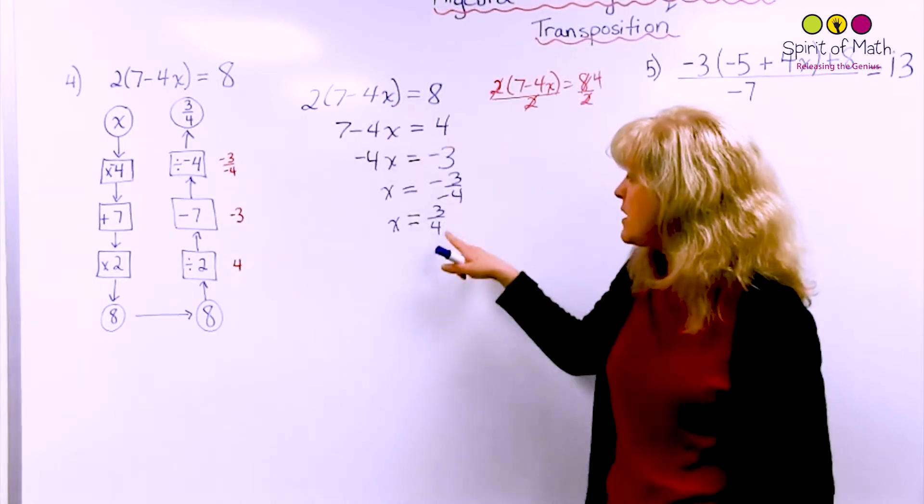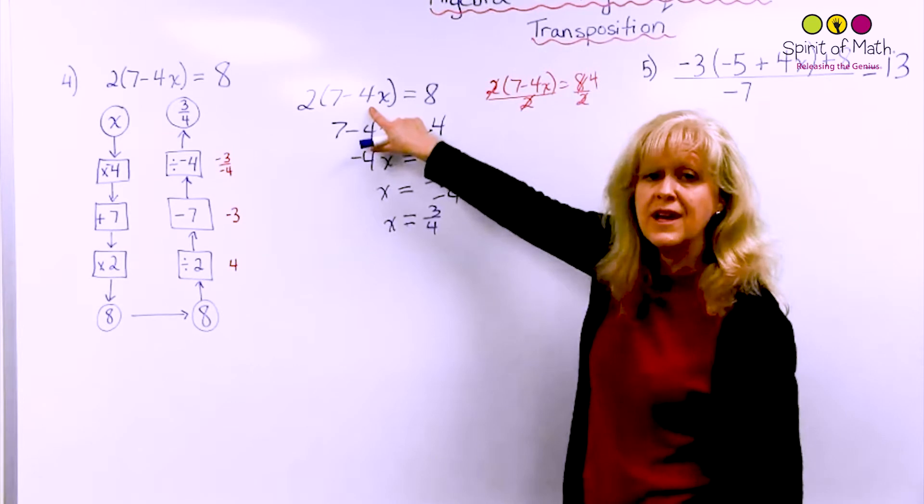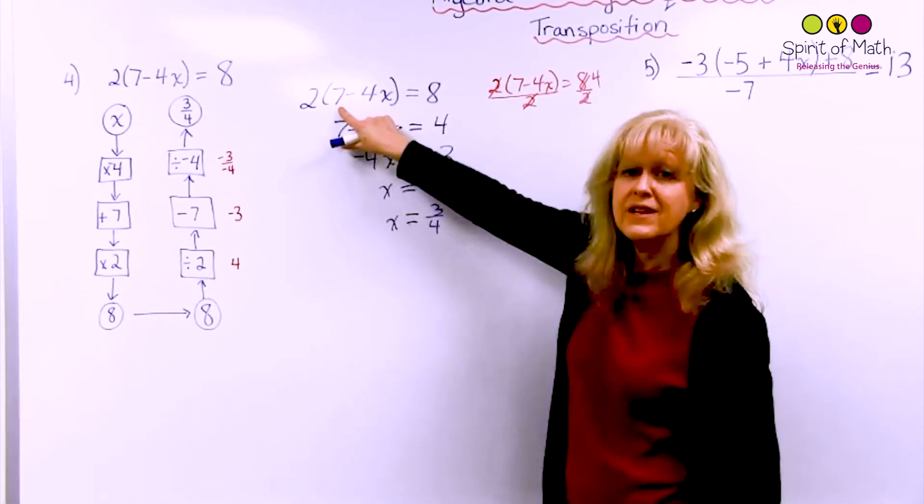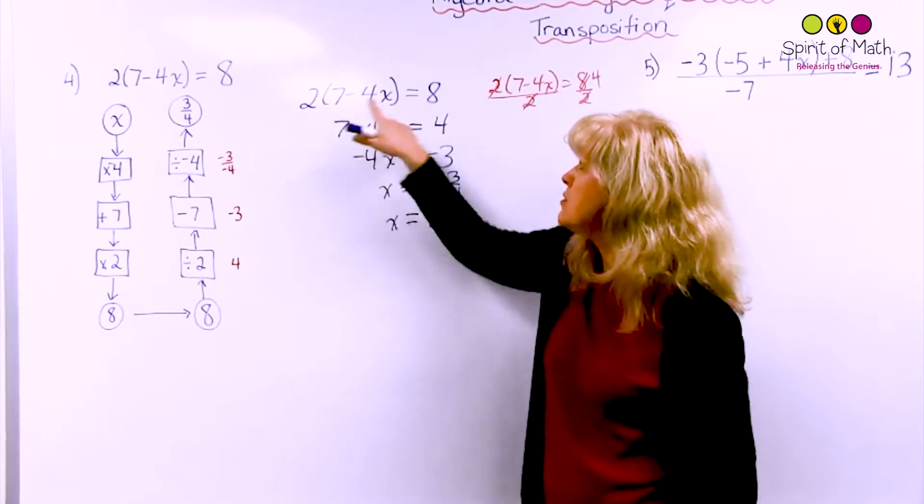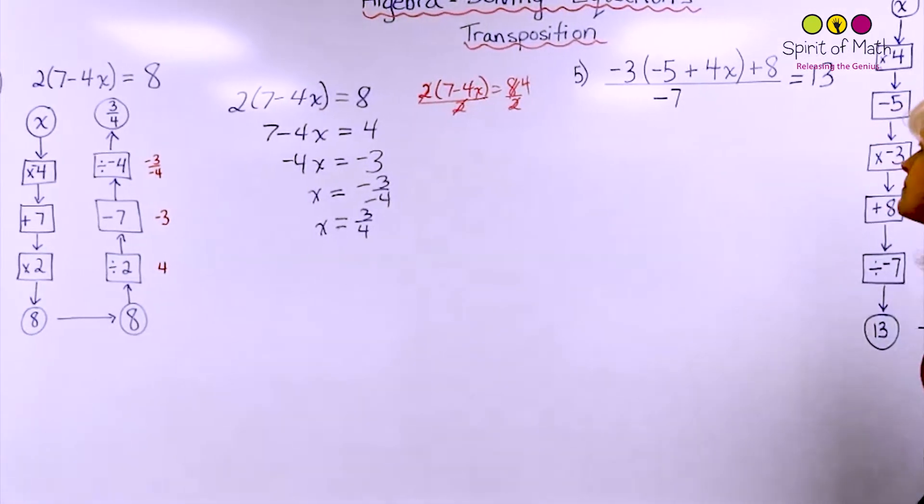And if you double-check that, and you say 3 quarters back in here, 3 quarters times negative 4 is negative 3 plus 7 is 4. 4 times 2 is 8. So it's always good to double-check if you can.